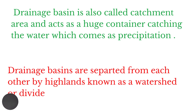The drainage basin is also called a catchment area and acts as a huge container, catching the water which comes as precipitation. Drainage basins are separated from each other by highlands known as watershed, also called divide.